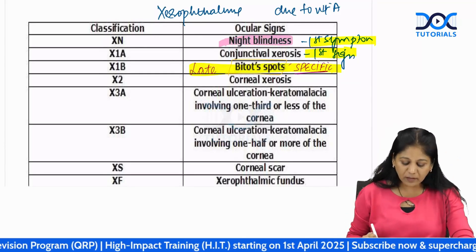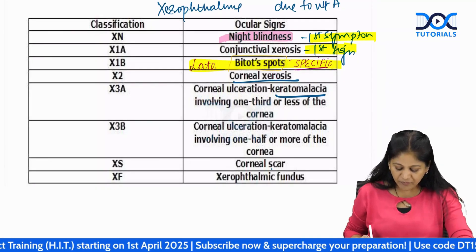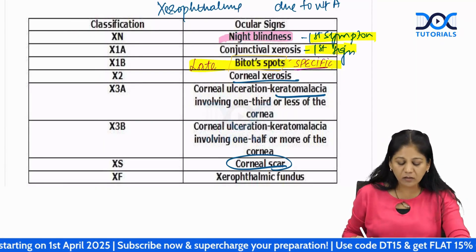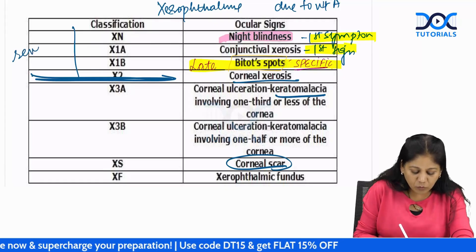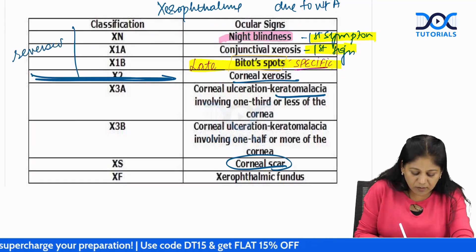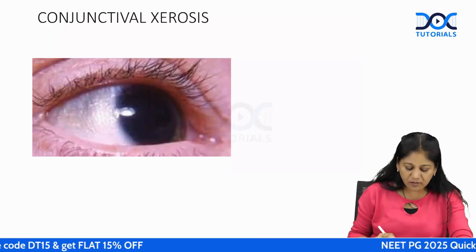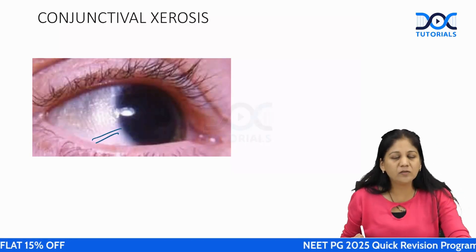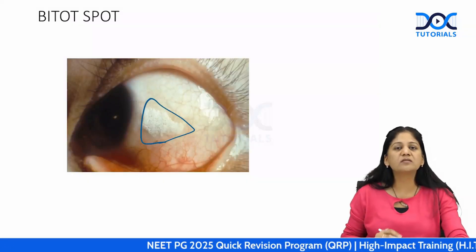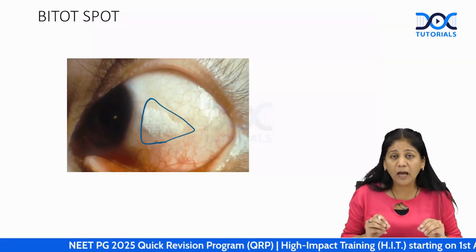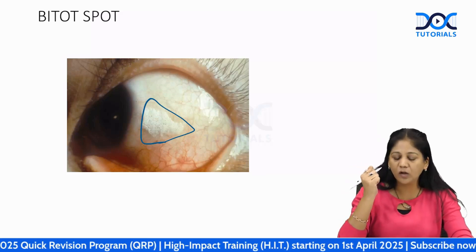Later comes corneal dryness, then ulceration, then scar formation and retinal changes. Till stage X2, the condition is absolutely reversible. The first sign — conjunctival xerosis — appears as a foaming triangular patch on the temporal part of the conjunctiva.